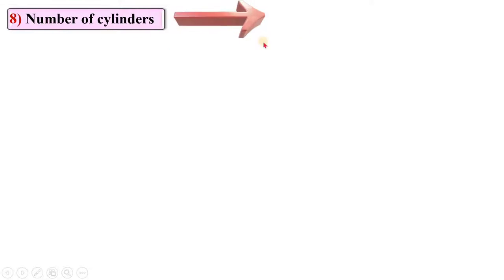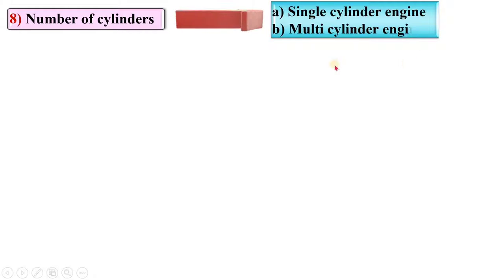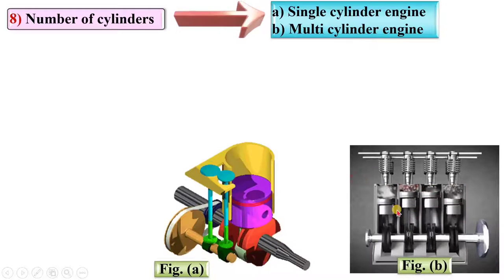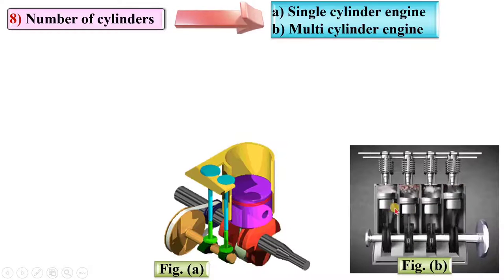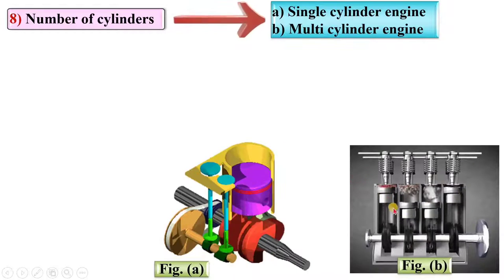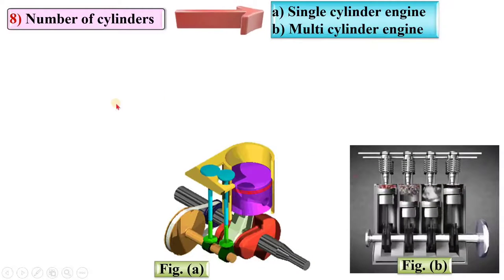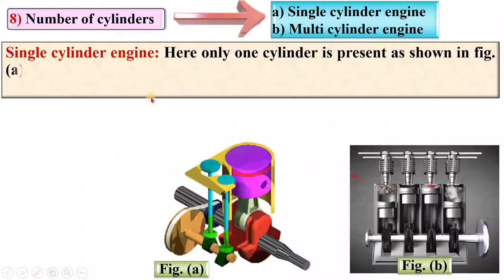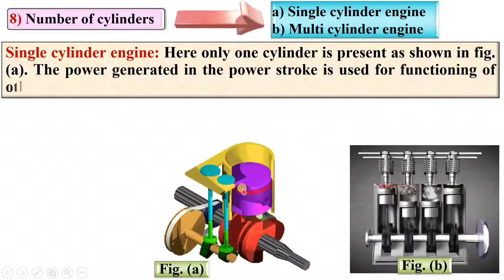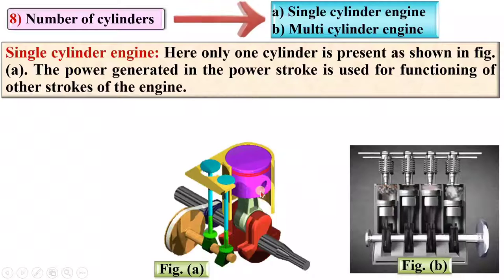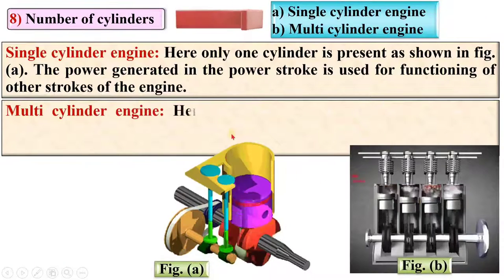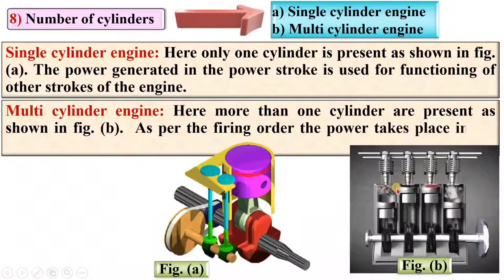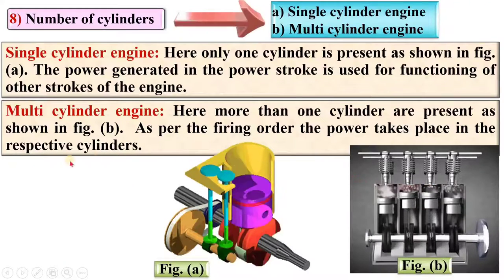According to the number of cylinders, IC engines are classified as single-cylinder engines and multi-cylinder engines. In a single-cylinder engine, only one cylinder is present and the power generated in the power stroke is used for functioning of the other strokes. In a multi-cylinder engine, more than one cylinder is present, and as per the firing order, power takes place in the respective cylinders.